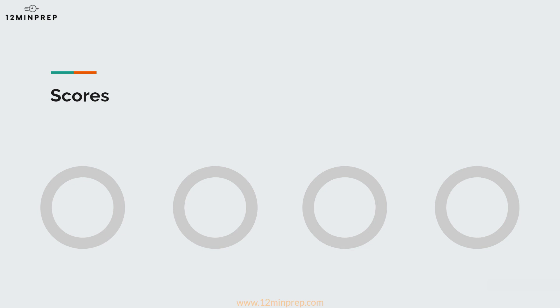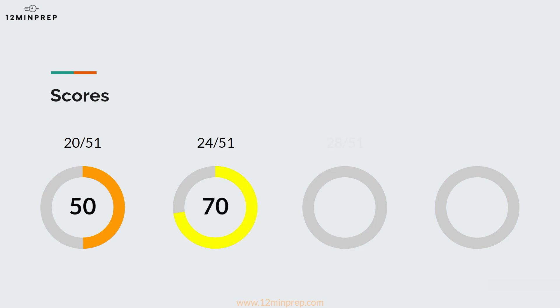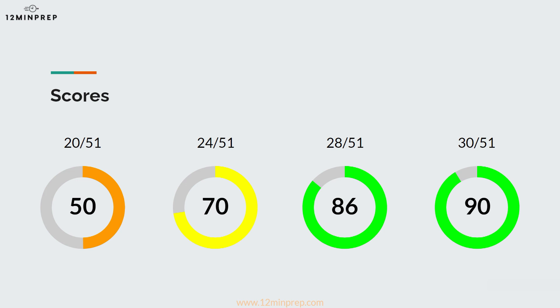While the test publisher does not provide official information about scores, there are a few estimated benchmarks that you should be aware of. The average score is around 20 out of 51. A score of 24 is in the 70th percentile, a score of 28 is in the 86th percentile, and a score of 30 puts you in the 90th percentile. From this you can see how big of a difference a few questions can make, and how crucial it is to go into this test prepared.